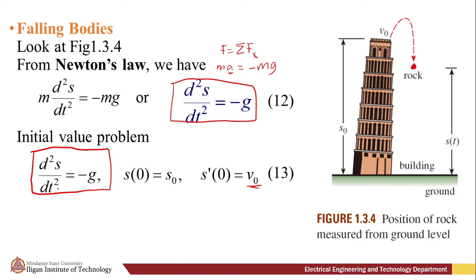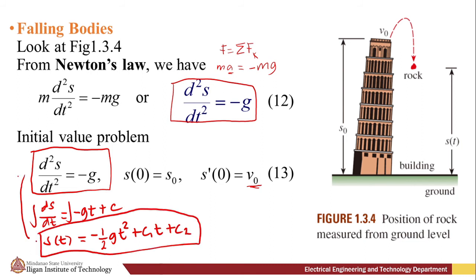To apply the initial value problem here, we just have to integrate our differential equation with respect to time twice. Integrating it with respect to variable t, first integration we have ds/dt = -gt + c₁. Then we integrate it again with respect to t. We have s(t) = -½gt² + c₁t + c₂. So we have this solution for this second order differential equation.